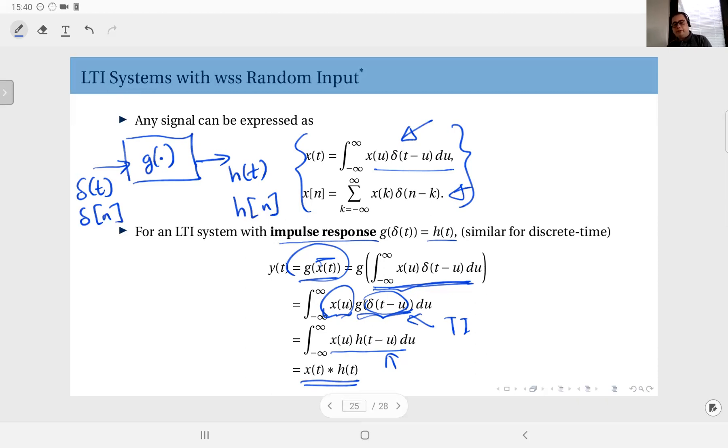This is a very basic result and you can do a similar, in fact an easier derivation for discrete time. Essentially the output of an LTI system is equal to the input convolved with the impulse response of this system. So that means the impulse response by itself is sufficient to represent any LTI system.